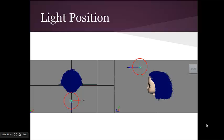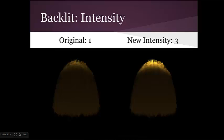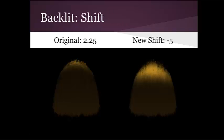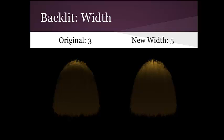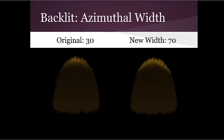For the rim light examples, the light is in front of and above the character. Azimuthal width is a horizontal width across hair strands. So you can see here that the increase in degree to 70 stretches the highlight across the edge of the hair.